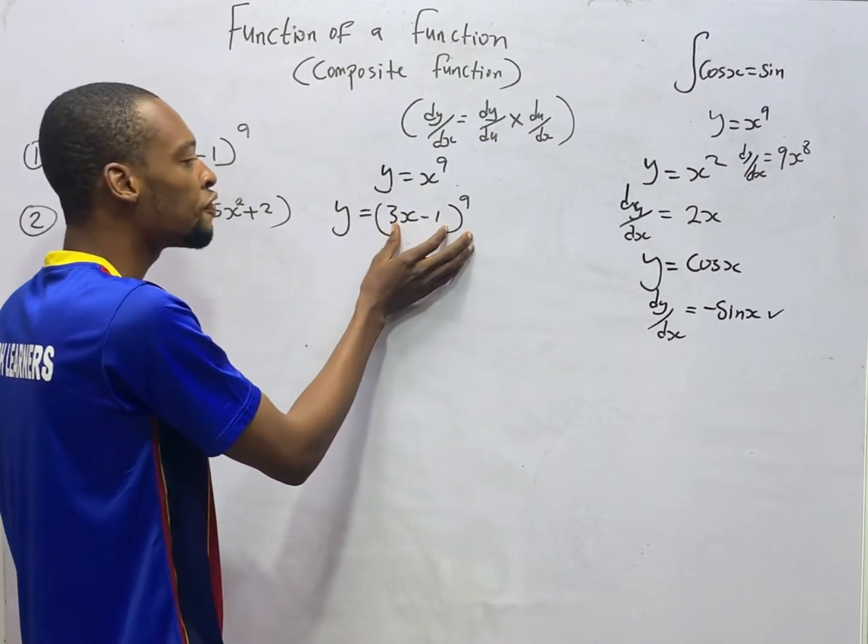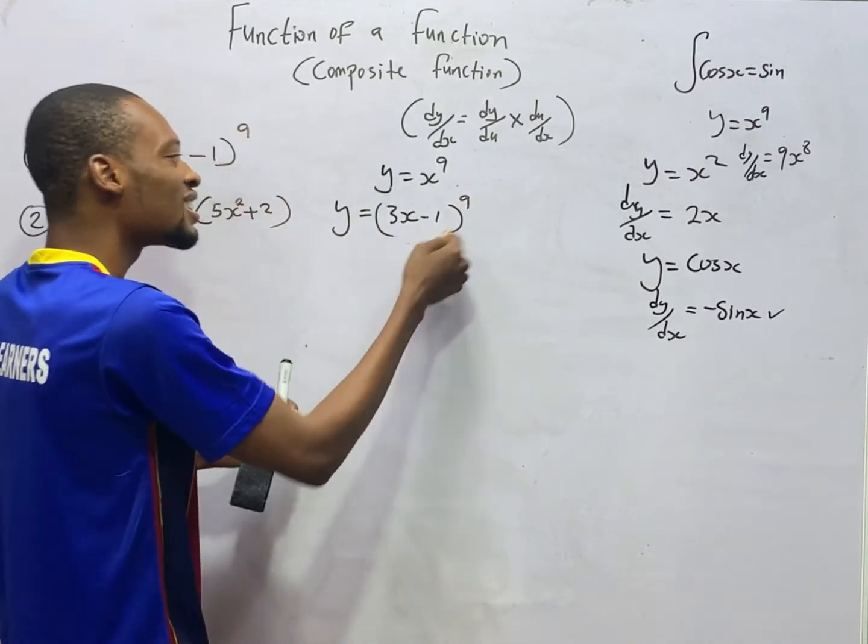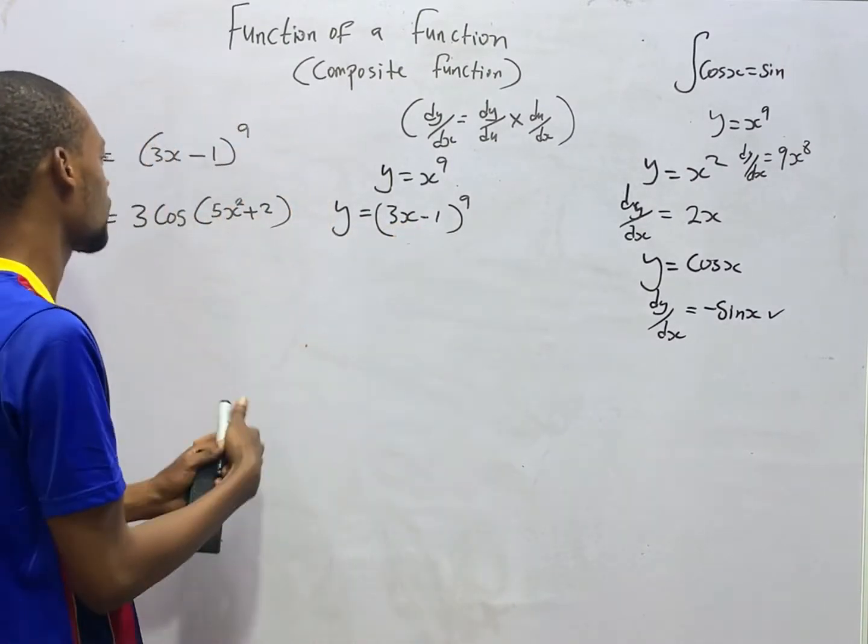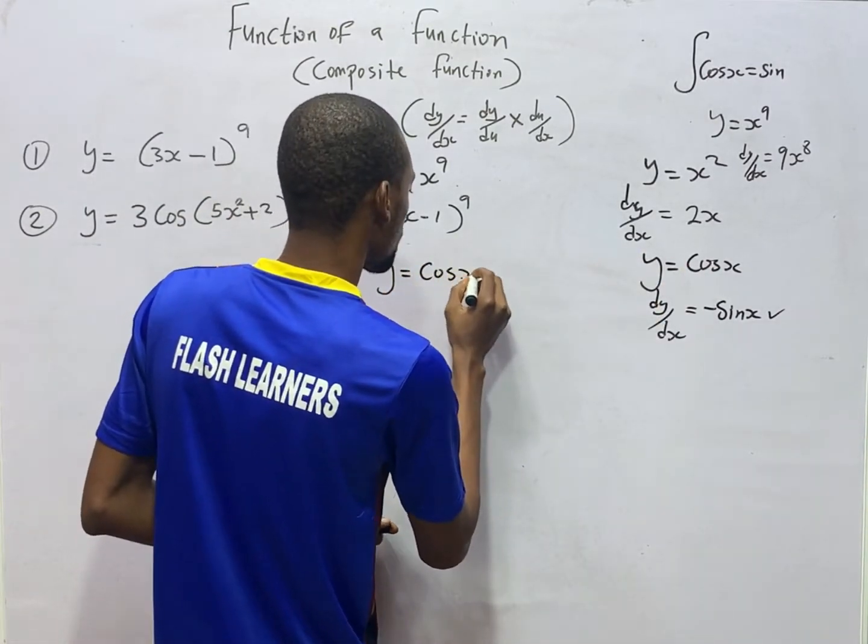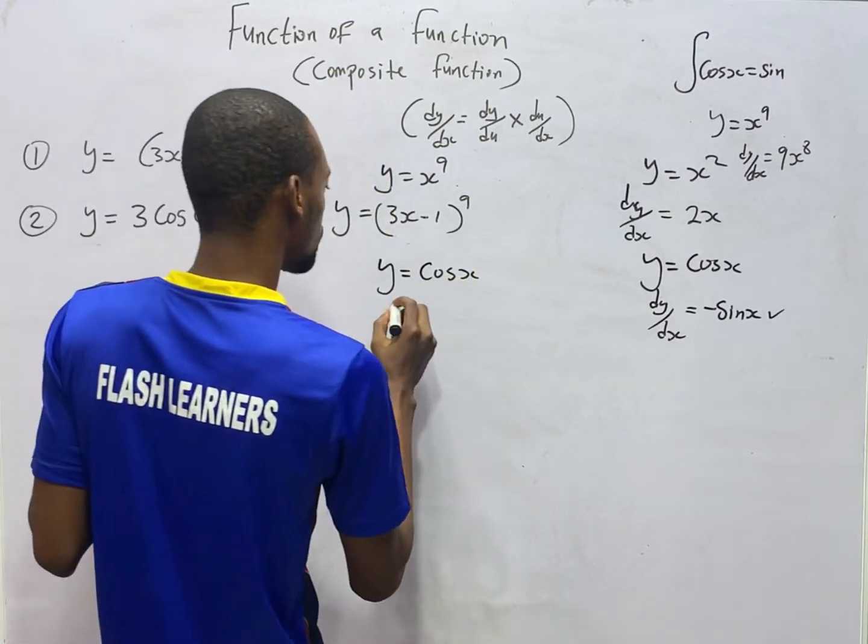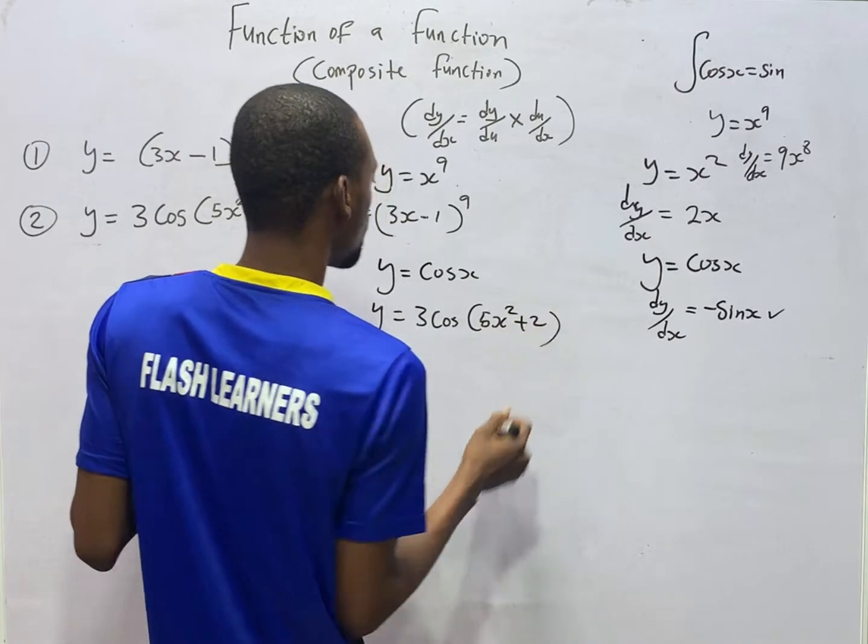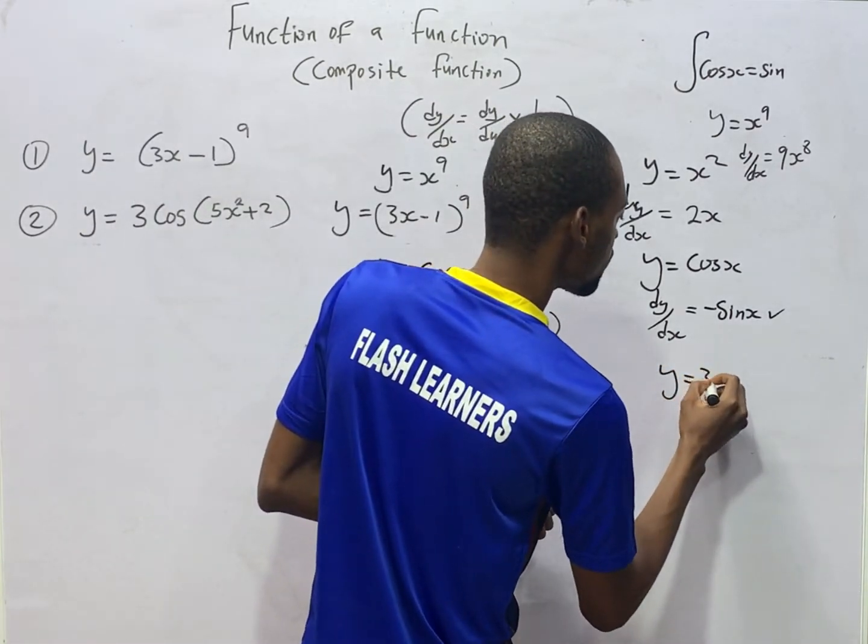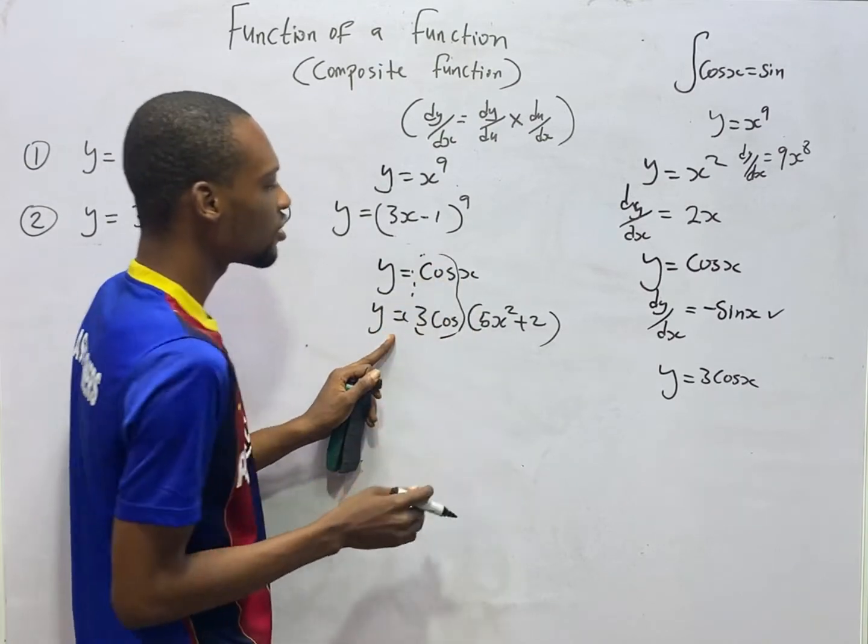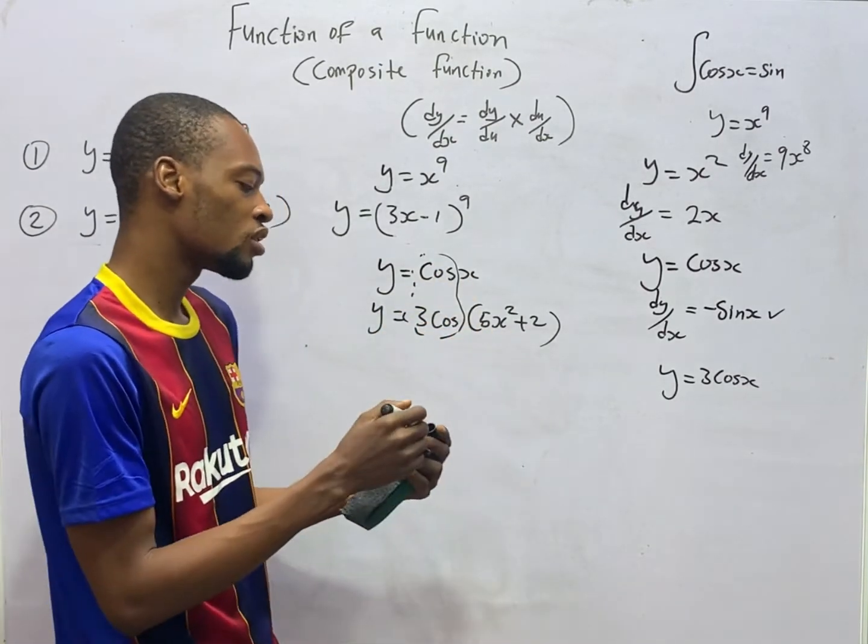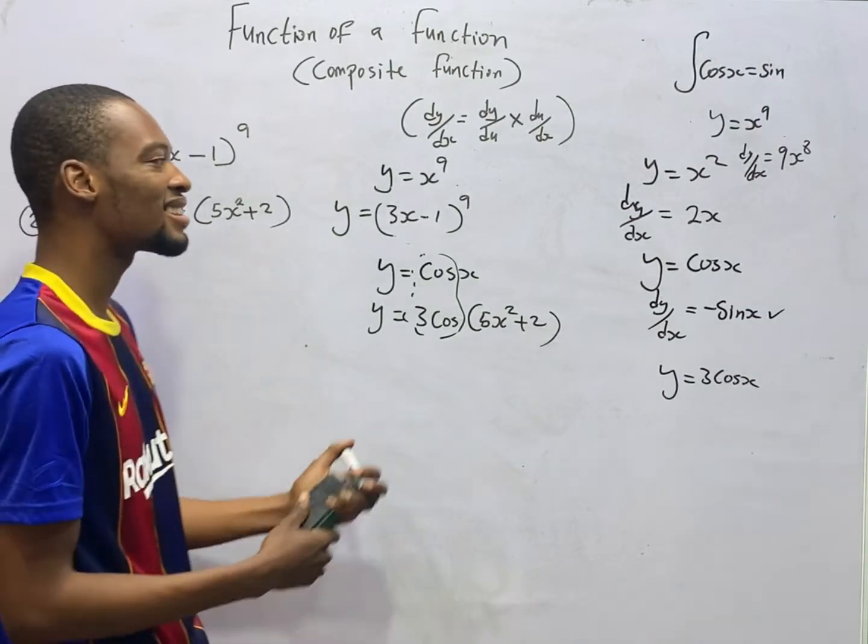This x now is no longer a single value. It's carrying another function. So this is something as y equals u raised to the power of 9, where u is also another function, which is equal to 3x-1. Look at this. Y equals cos x. Compare it to this: y equals 3 cos(5x²+2). Looking at this, you see that x is now 5x²+2. So x is now carrying another function. That's why we say function of a function, when one function carries another function.